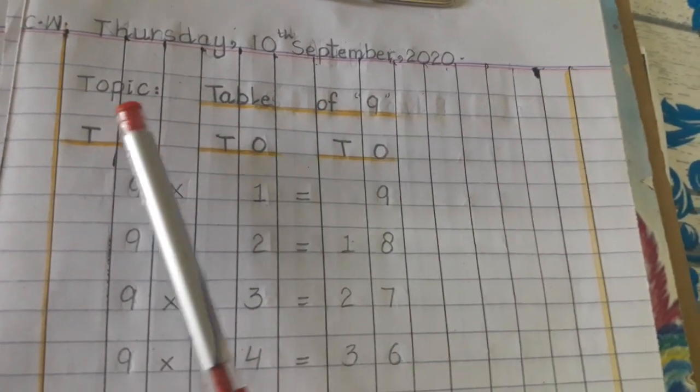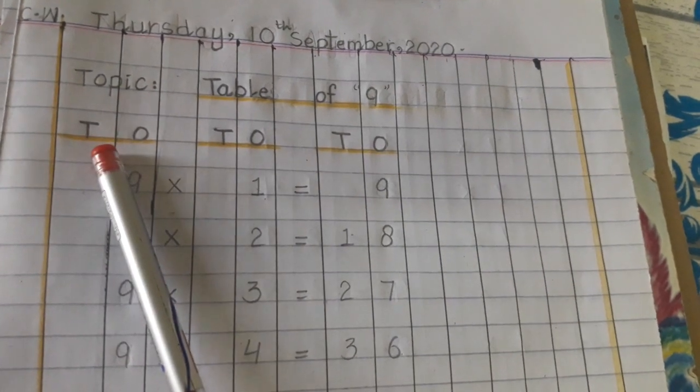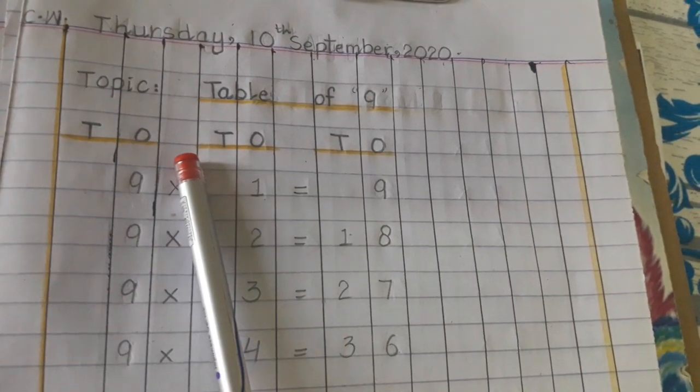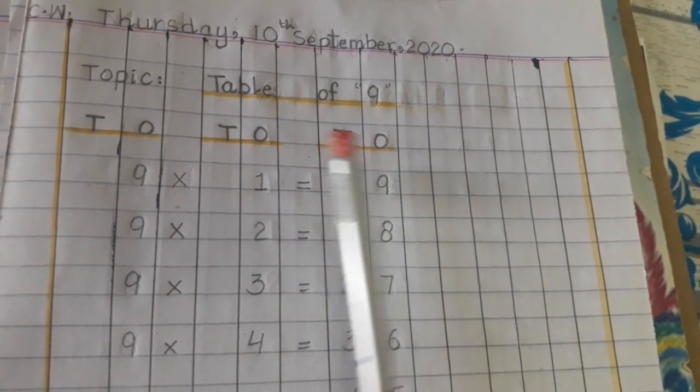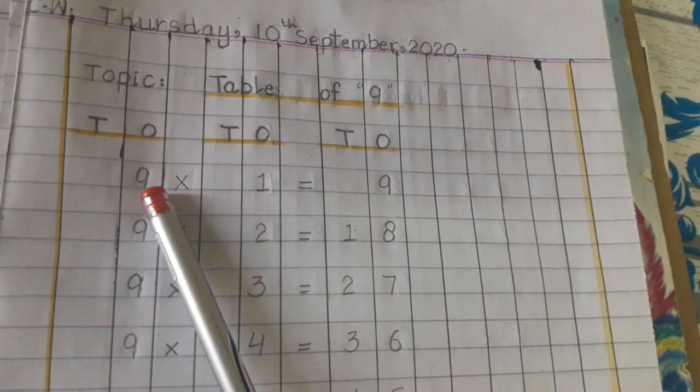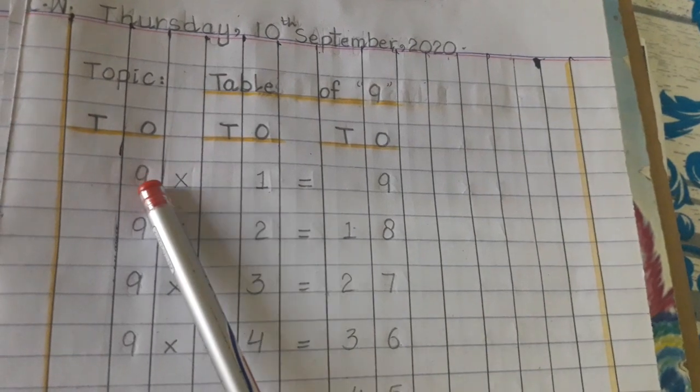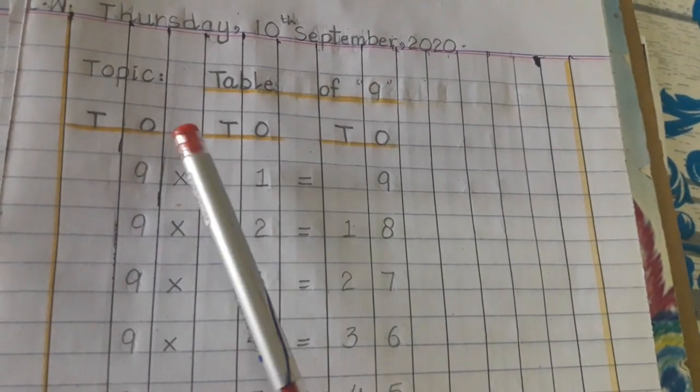Then underline the topic, again skip one line and write tens and ones. Again skip one line, tens and ones. Skip this row and tens and ones. Because nine is only one digit, so we will write it in ones place.